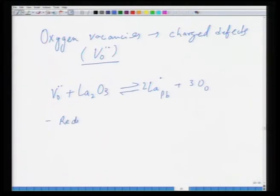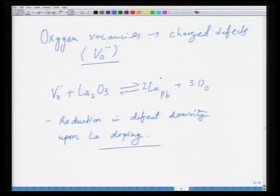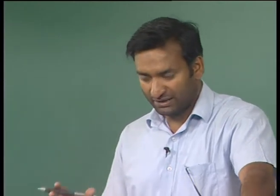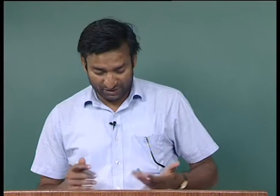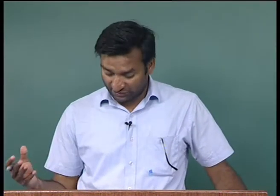Lanthanum doping leads to reduction in defect density. These defects not only increase conductivity but also impede domain motion — they pin domain boundaries so they cannot move freely during switching, degrading properties. Doping with appropriate elements that reduce defect density can tackle this. It reduces dielectric losses, improves the coupling coefficient, and leads to reduction in coercivity as a result of easier domain motion.